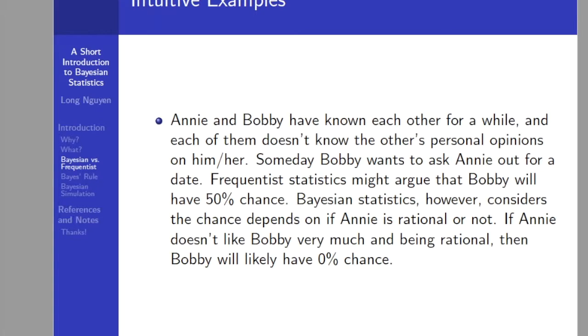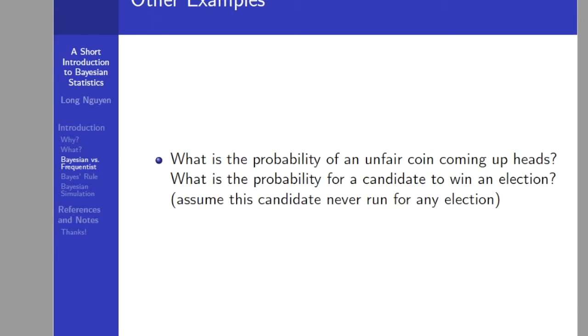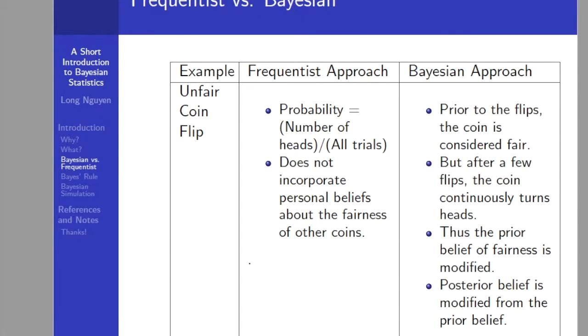Let's take a closer look at the difference between frequentist statistics and Bayesian statistics by two examples. What is the probability of an unfair coin coming up heads? And what is the probability for a candidate to win an election, assuming this candidate never ran for any election? About the unfair coin flip, on the frequentist approach, the probability of seeing a head when the unfair coin is flipped is a long-run relative frequency of seeing a head when repeated flips of the coin are carried out. As we carry on more coin flips, the number of heads obtained as a proportion of the total flips tends to be the true or physical probability of the coin coming up as heads.